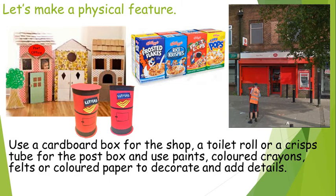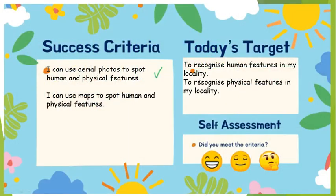Let's check how we got on with our targets for today. We were really good at finding human features in our locality — we spotted our school, our roads, and lots of different shops. We also had a look at physical features: we found the River Salwarp by Mrs Edwards' house and all those wonderful nature reserves in and around Dudley. We did that by using photos and maps — I think we've had a really successful lesson today, and Mrs Edwards has definitely learned something new: the post office is a human feature, not a physical one!